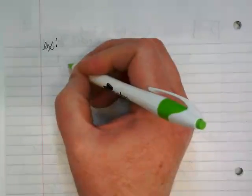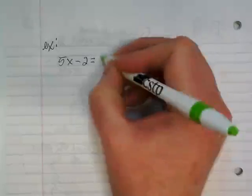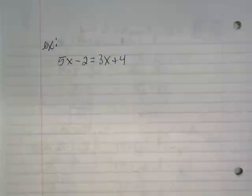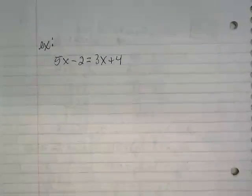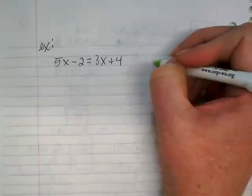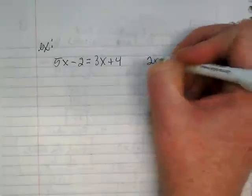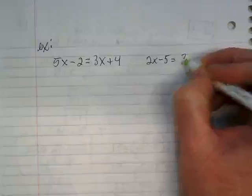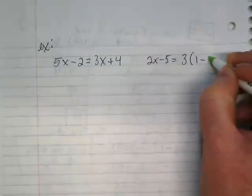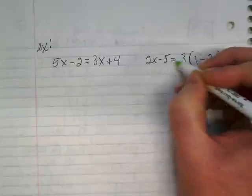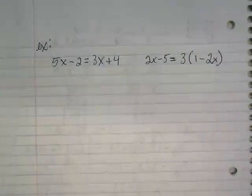On page 14, on your left side, I want you guys to do a few problems for me. So, these examples. How about if you do 5x minus 2 is equal to 3x plus 4. And then also try 2x minus 5 is equal to 3 times 1 minus 2x. Try those two and we'll check your work in just a moment.